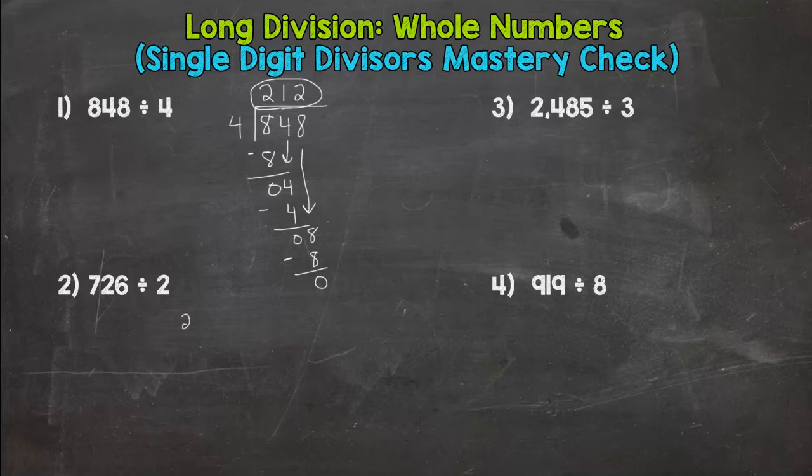Number two, our divisor is 2, and our dividend, or what we are splitting into groups or dividing up, goes on the inside. That is 726. So how many groups of 2 are in 7? Three. Three times 2 is 6. Subtract, we get 1. Bring down the 2.